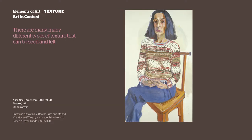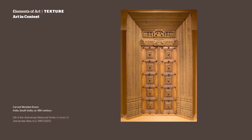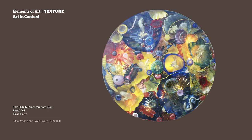There are many, many different types of texture that can be seen and felt. Textures can be rough or hard, lumpy or sharp. How many different types of texture can you name? Here are a few more: liquid, solid, wet, dry, dusty, sticky, gritty, furry, matte, shiny, scaly — the list goes on. Take a moment and look around your classroom. How many of the textures just listed can you find?